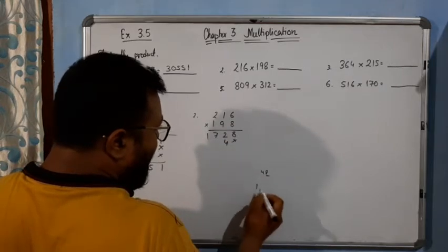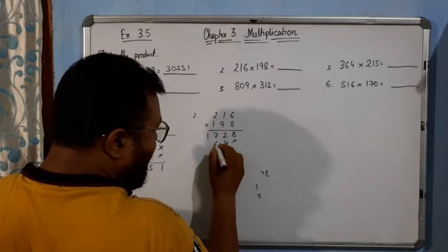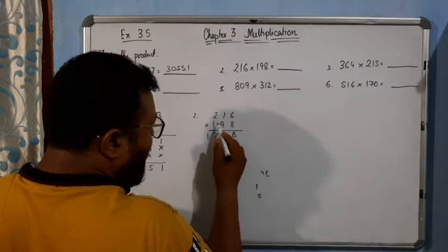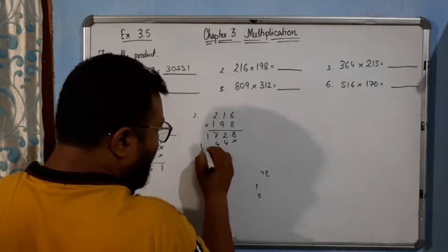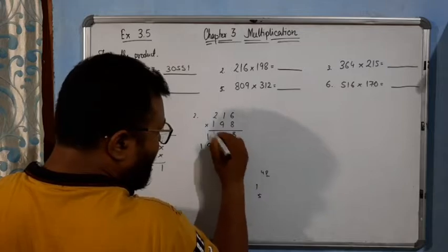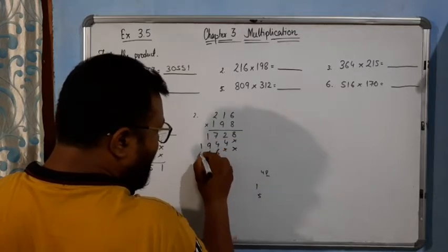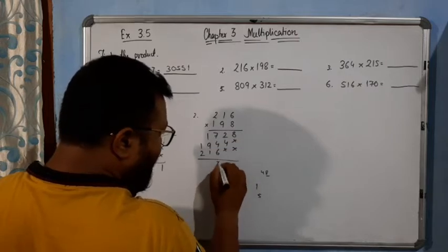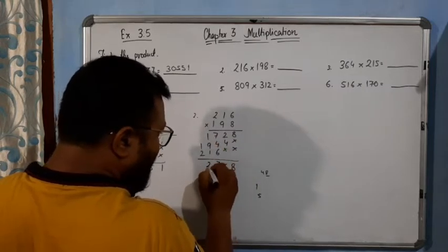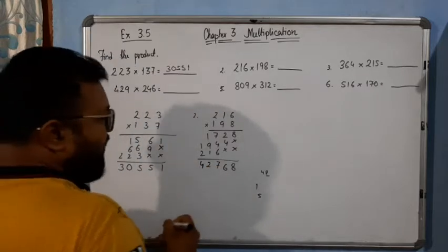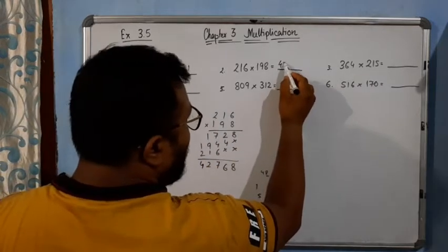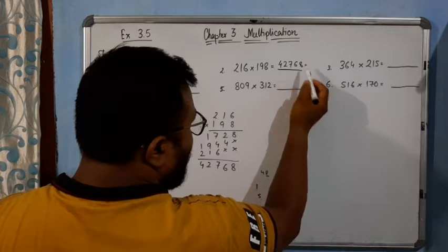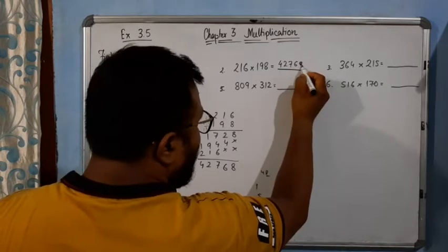Now 9. 9 times 6 is 54, write 4, carry 5. 9 times 1 is 9, 10, 11, 12, 14. Write 4, carry 1. 9 times 2 is 18, 19. Cross. Then 1 times 6 is 6, 1 times 1 is 1, 1 times 2 is 2. Adding the columns: 8, 6, 7, 2, 4. So it will be 42768.